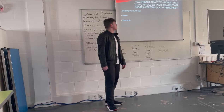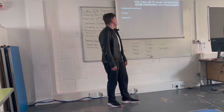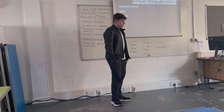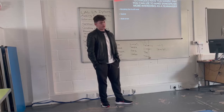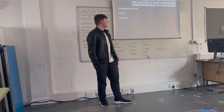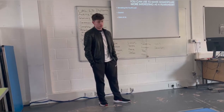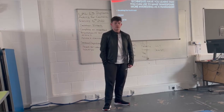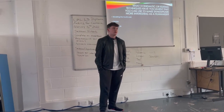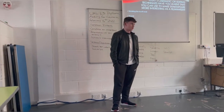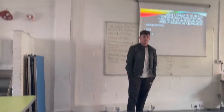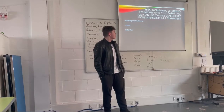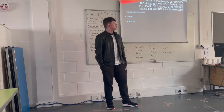What three cinematic or editing techniques have you learnt that you can use to make Shakespeare more interesting as a filmmaker? I chose breaking the fourth wall. I got this from the film Richard III — Ian McKellen, who plays Richard III, likes to break the fourth wall a lot. I thought that was interesting because the character, when addressing the camera, turns into a different person. I found that's quite an interesting filmmaking approach and I'd probably incorporate that into my FMP.